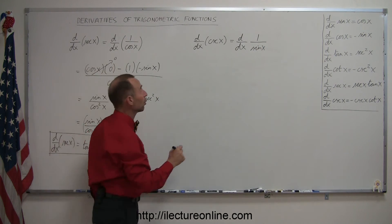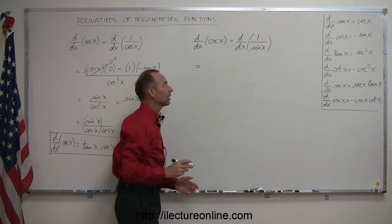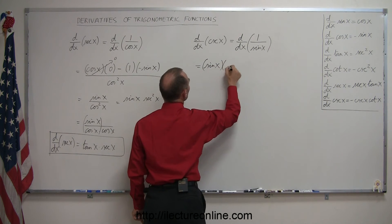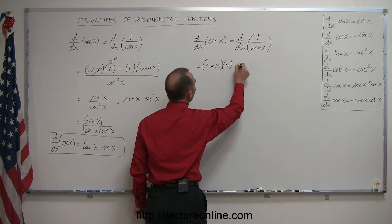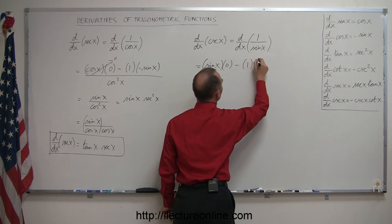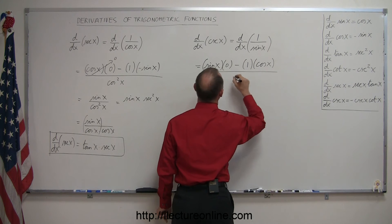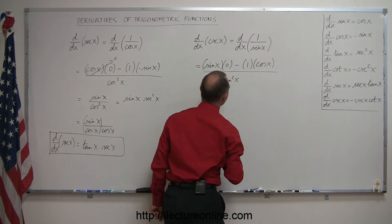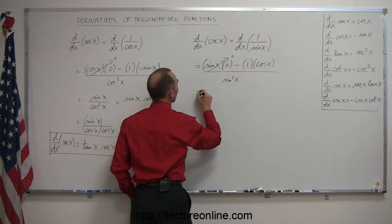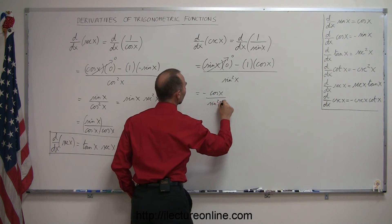Using the quotient rule, the derivative of 1 over sine of x can be written as the denominator, sine of x, times the derivative of the numerator — the derivative of 1 is zero — minus the numerator times the derivative of the denominator. The derivative of sine of x is cosine of x, and the whole thing is divided by sine squared of x. Since the first term goes to zero, we're left with negative cosine of x over sine squared of x.